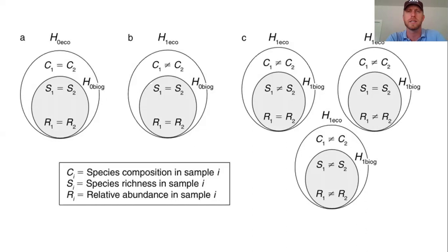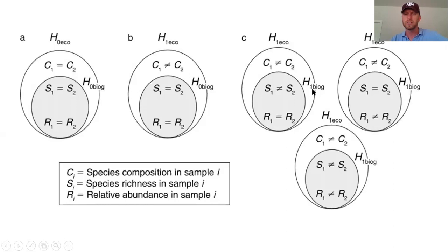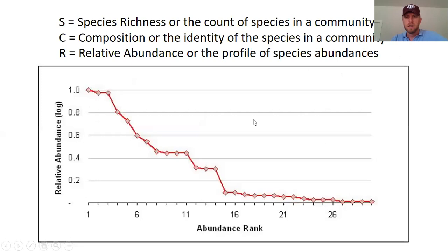We can think about this in a spatial context - thus biogeographic - or an ecological context where we're sampling the exact same site through time and have questions about whether components of diversity have changed. Panel B shows the condition where the ecological null hypothesis is not supported: composition of collection one is not equal to collection two, but components of the biogeographic null hypothesis are supported. Panel C shows other iterations where species richness or relative abundance may not be equal, giving different levels of non-support for the null hypothesis.